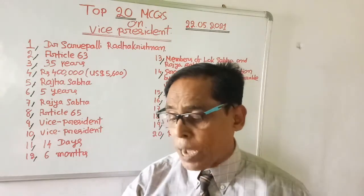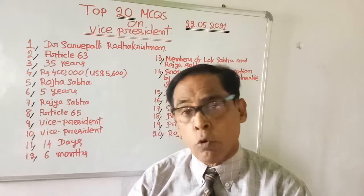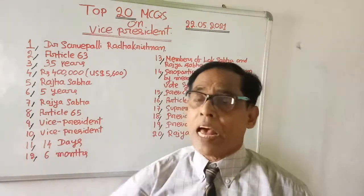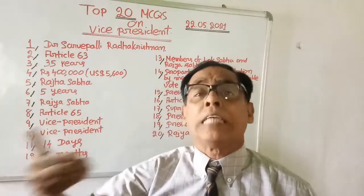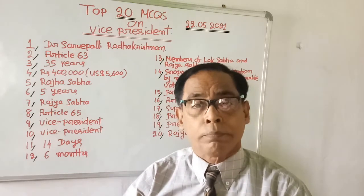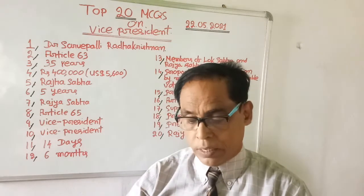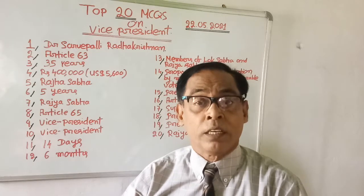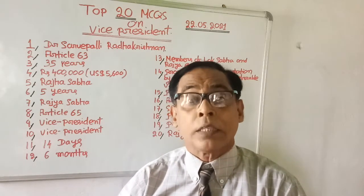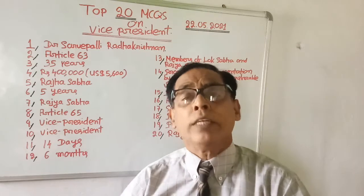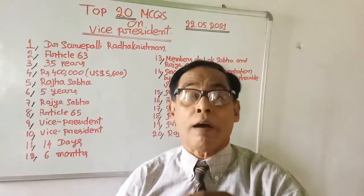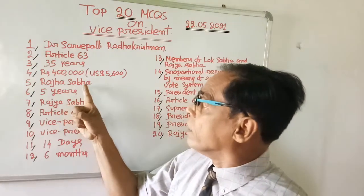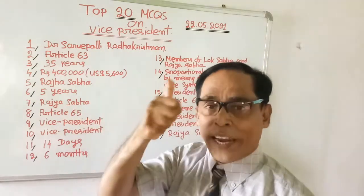Question number five: For the office of Vice President, a candidate must have qualifications for which house? Choices are Lok Sabha, Rajya Sabha, Legislative Council of State, or Legislative Assembly of State. The right answer is Rajya Sabha.